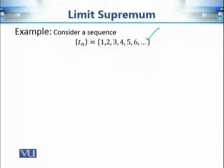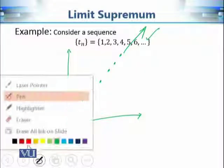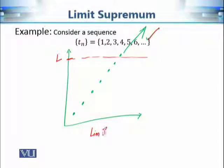Now let's consider the sequence 1, 2, 3, 4, 5, 6, and so on. If we plot the terms, they go in an increasing direction. It is hard to find a LIMSUP here because if we take any number as a candidate, there are always infinitely many terms of the sequence bigger than it. So we say that the LIMSUP of this sequence t_n is equal to infinity.